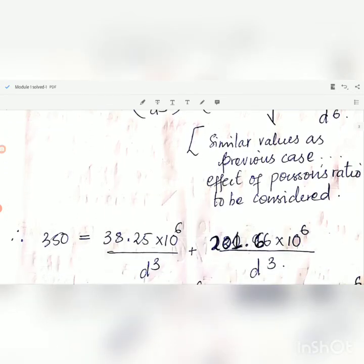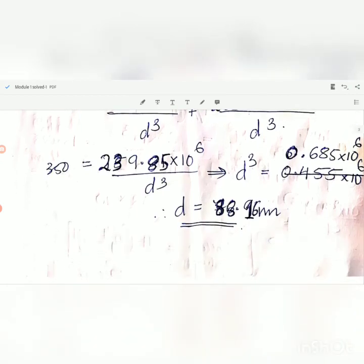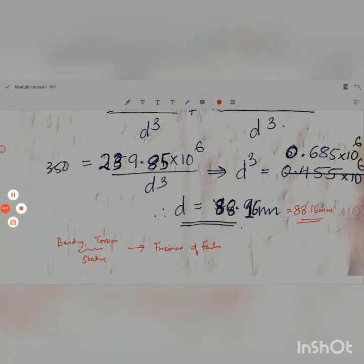We can substitute the value sigma x and tau xy similar to the previous step. We will be getting the value of diameter equal to 88.16 mm. In this session we see that whenever we have bending moment and torsion, and if both are static, we can apply the theories of failure. Thank you.